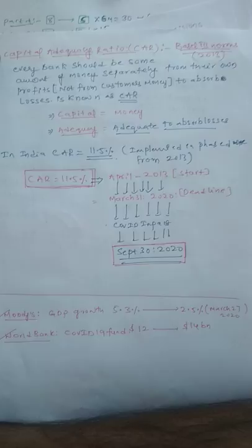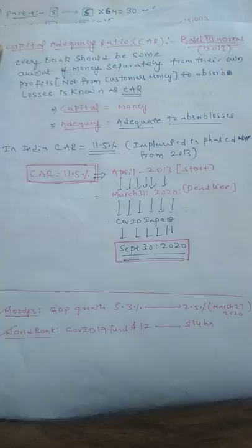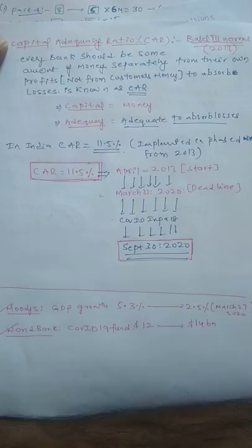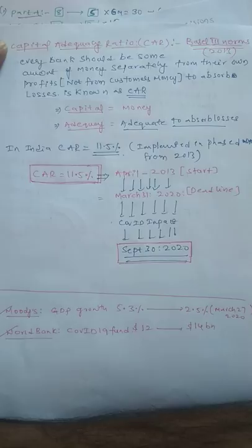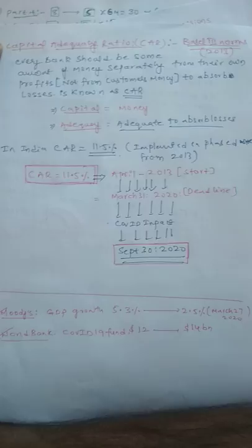Finally, Moody's reduced India's GDP growth rate from 5.3% to 2.5% on March 27th morning. The World Bank announced a COVID fund of 14 billion dollars to deal with the pandemic. Please keep these updates in mind. Thank you.